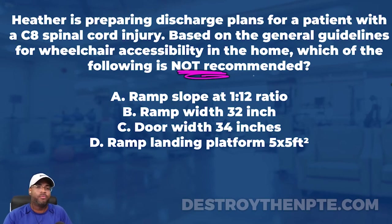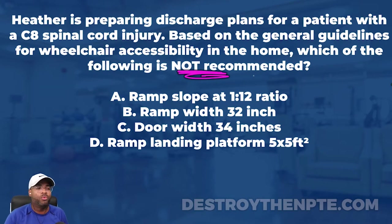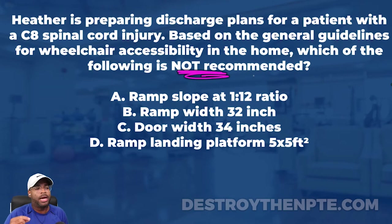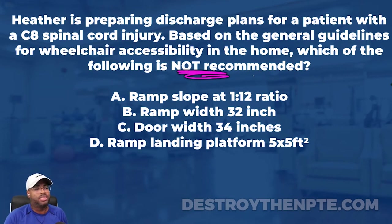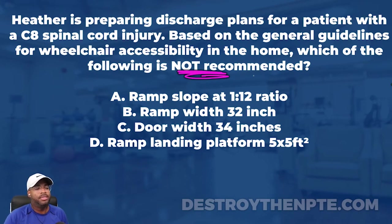For those of you on the podcast, let me go through the answer choices again. A was ramp slope at a 1 to 12 ratio. B is ramp width at 32 inches. C is door width at 34 inches. And D is ramp landing platform at 5 by 5 feet squared.